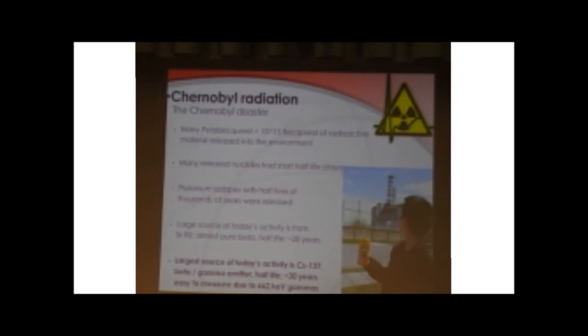In the Chernobyl disaster, many petabecquerel, it was 10 to the power of 15 becquerel of radioactive material, were released to the environment. Many of these radionuclides had short half-lives, like iodine-131, which is well known, which has a half-life of about 8 days, so it's long gone now. Plutonium isotopes with half-lives of thousands of years were released. A large amount of today's activity is from strontium-90, which has a half-life of 28 years, pure beta emitter. But the largest source that you can measure is from cesium-137, which is a mixed beta-gamma emitter and has a nice gamma line of 662 kV, which can be very well measured in the gamma spectrometer.